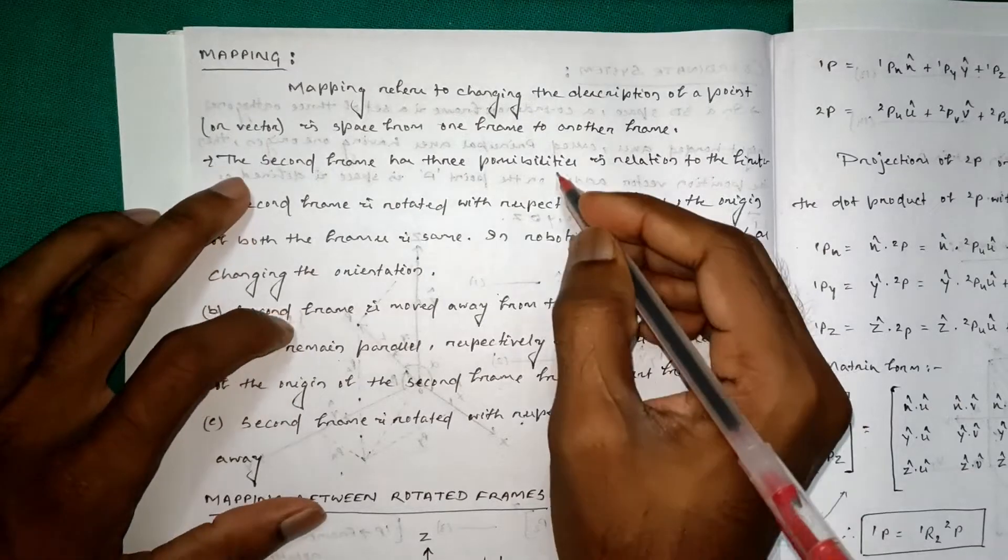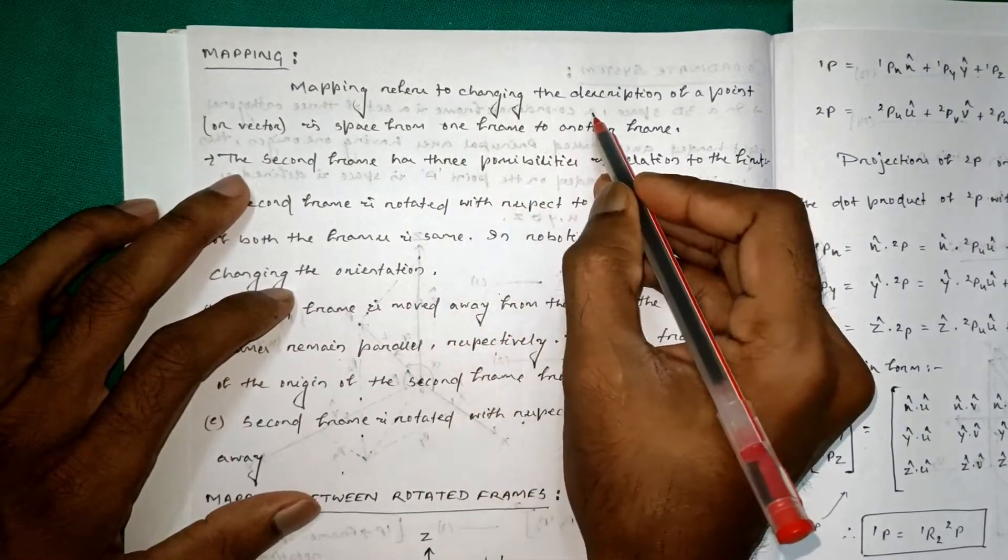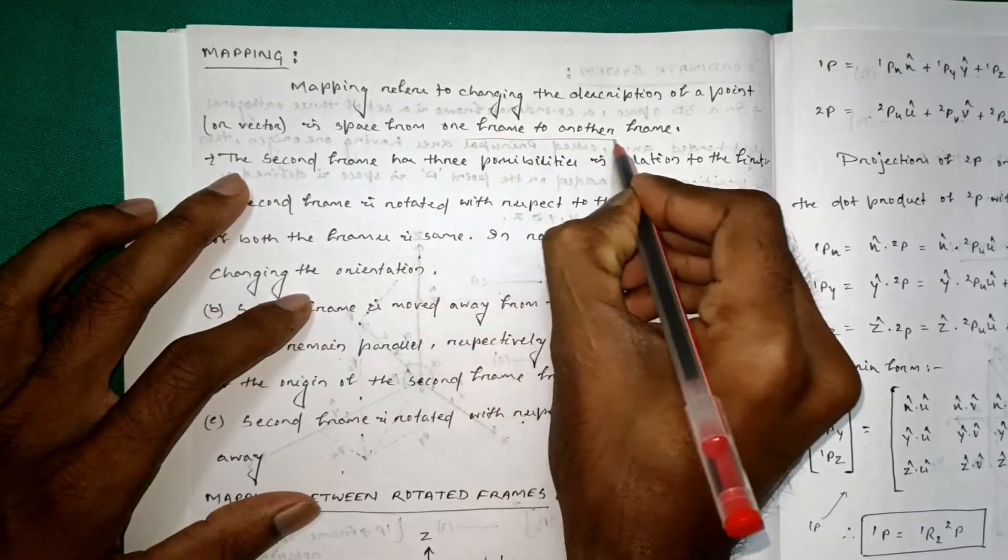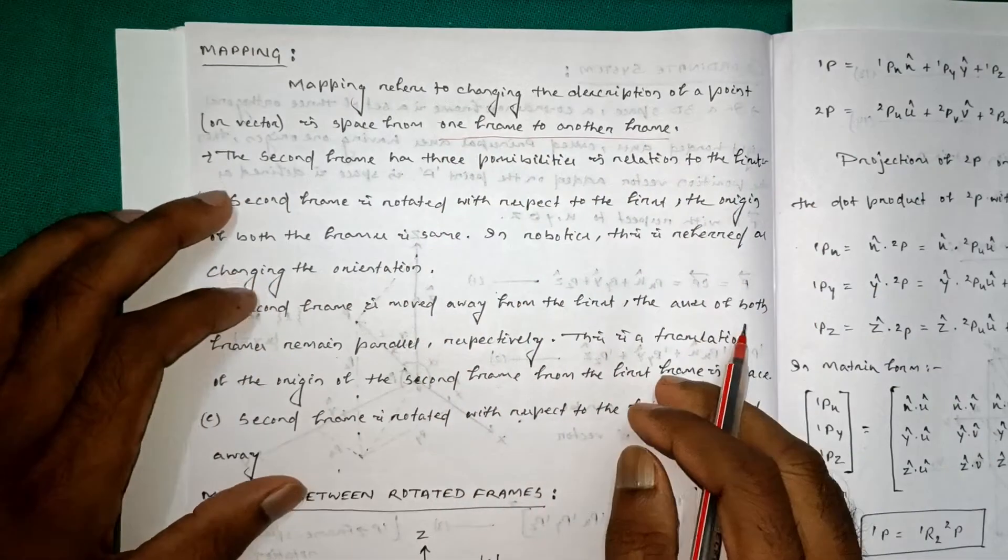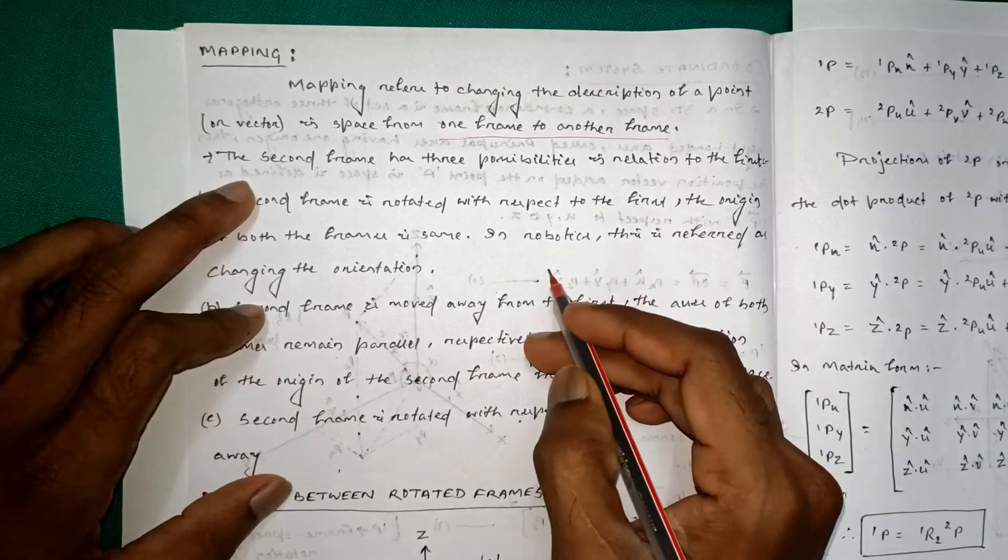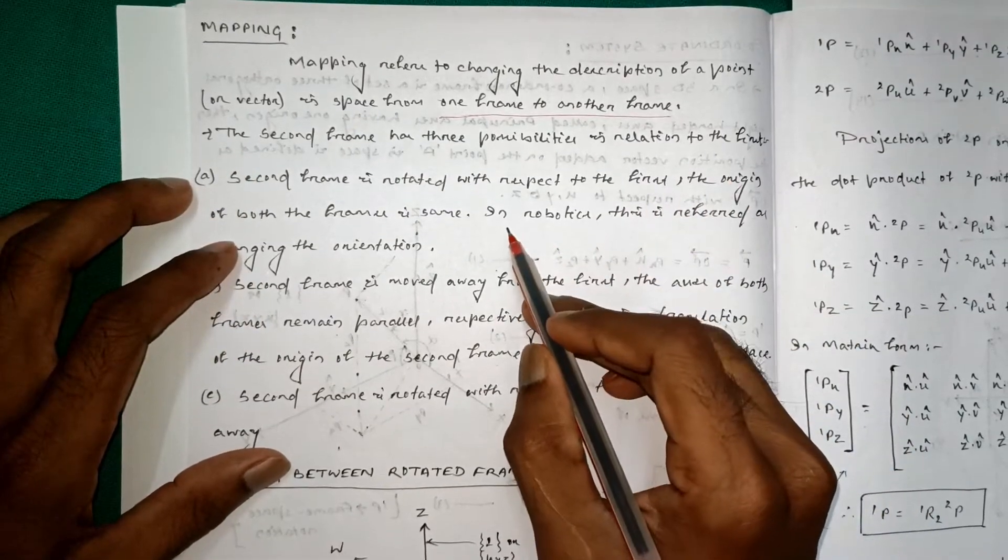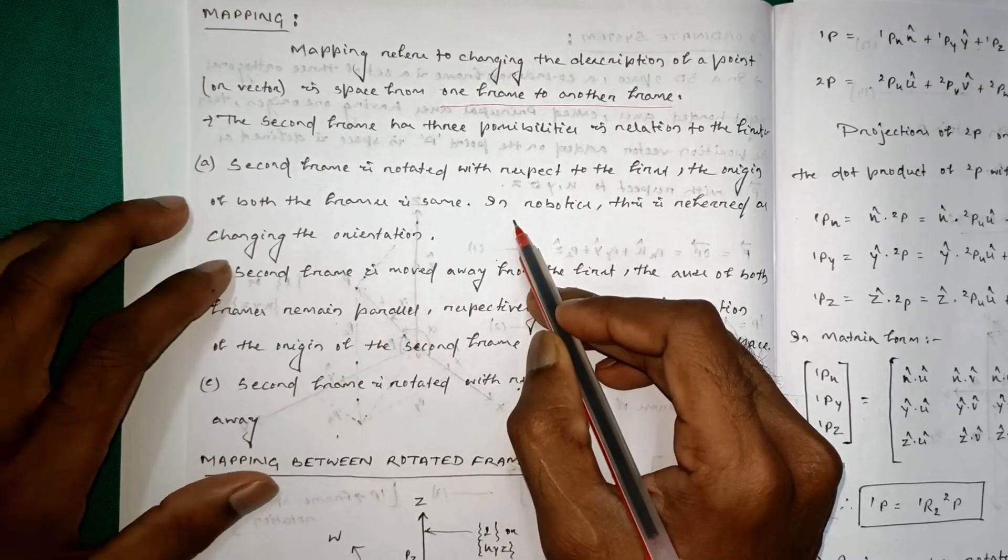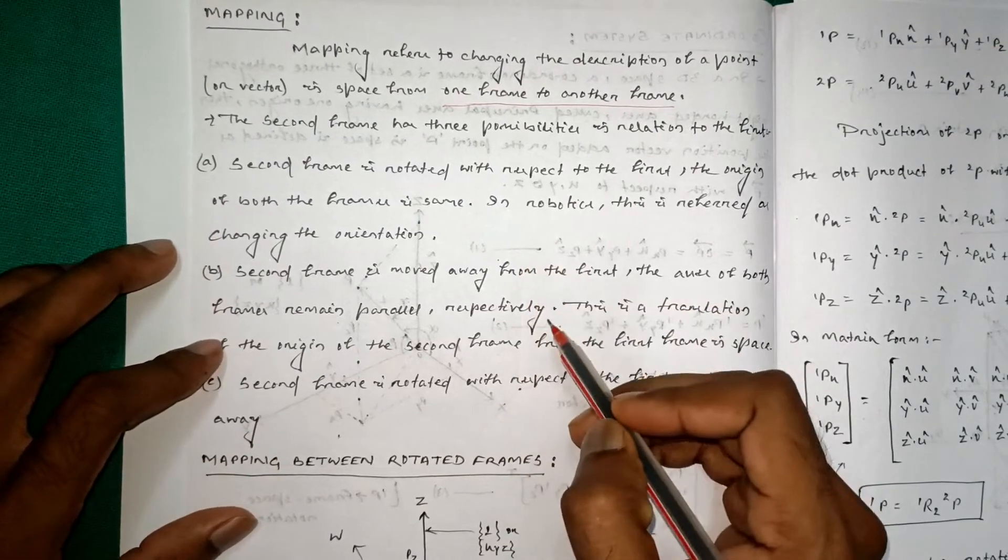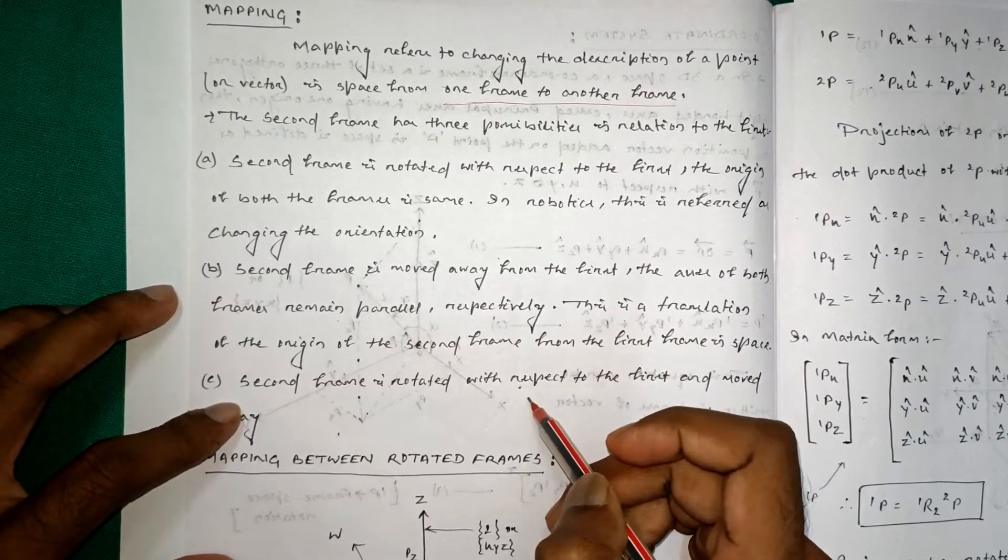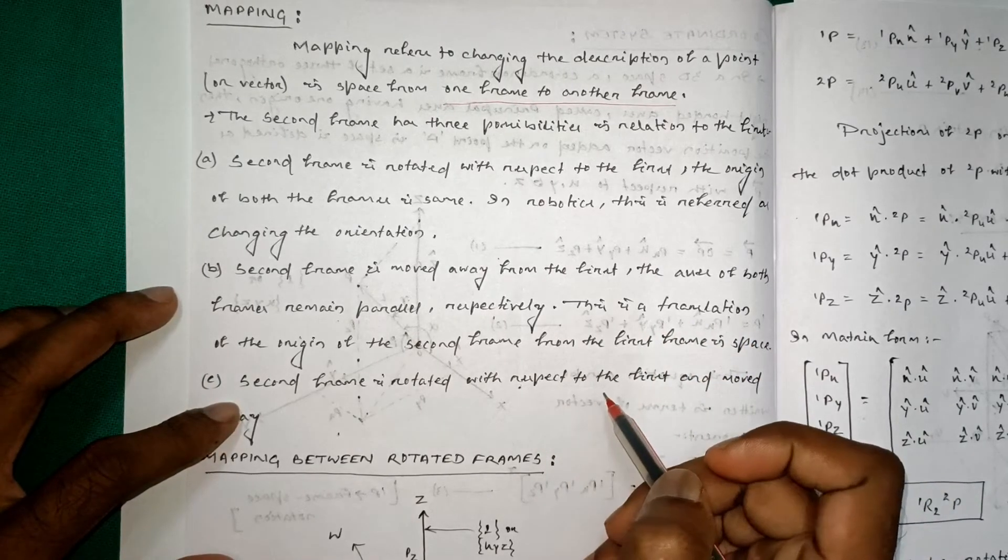This is the definition here. Mapping refers to changing the description of a point or vector in space from one frame to another frame. The second frame has three possibilities in relation to the first: the first one is rotation, referred as changing the orientation; the second one is translation; and the third one is rotation plus translation.